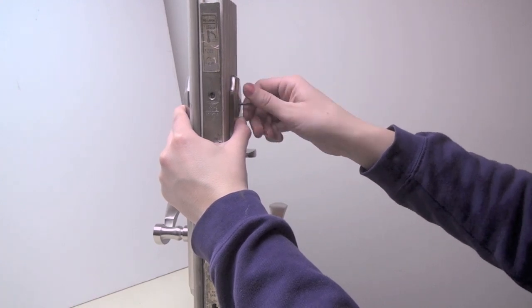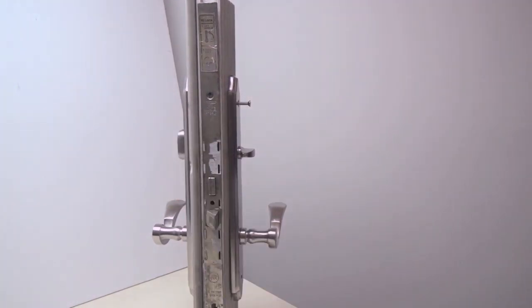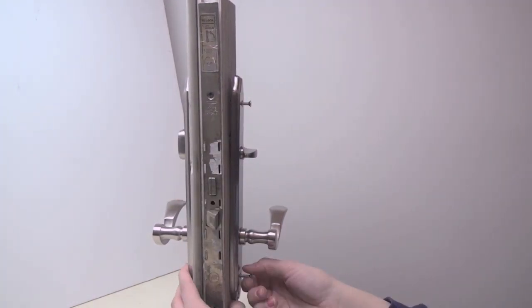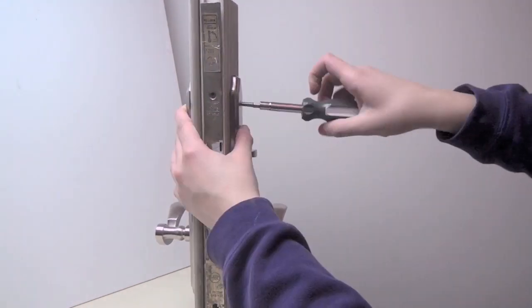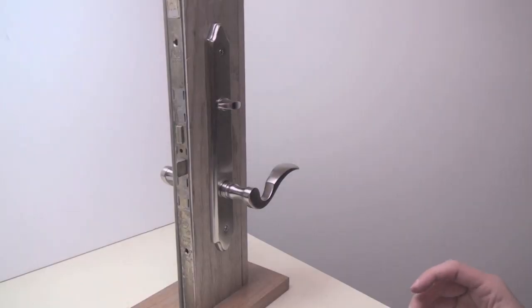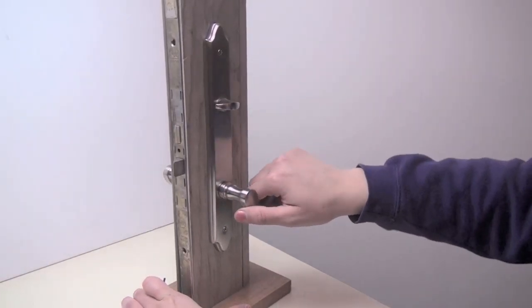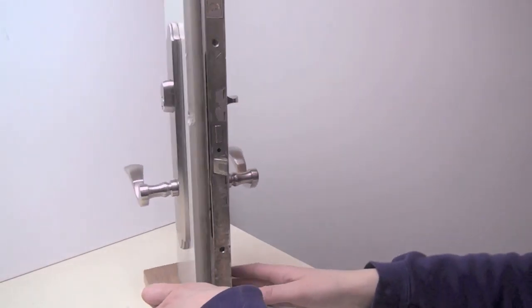Now, screw the trim in place from the interior side of the door. Double check that everything works one more time before actually closing your door.